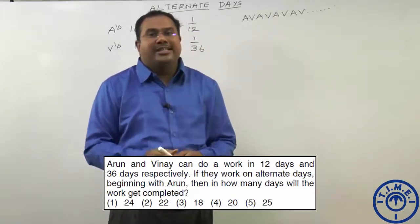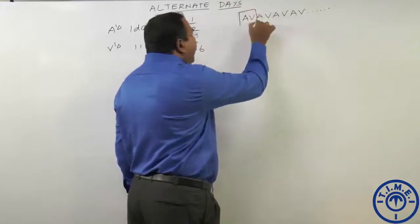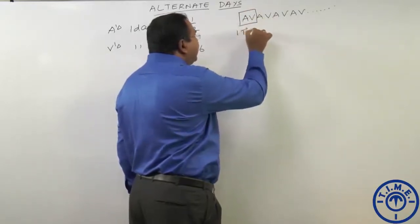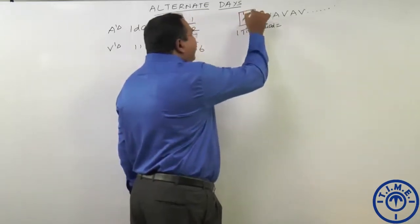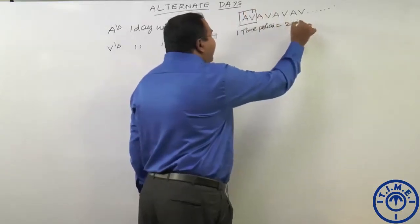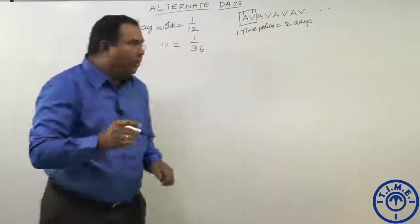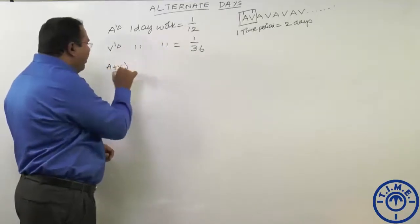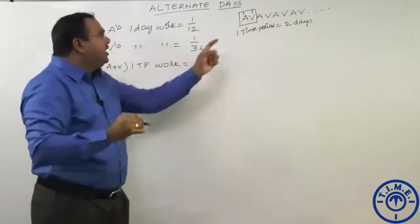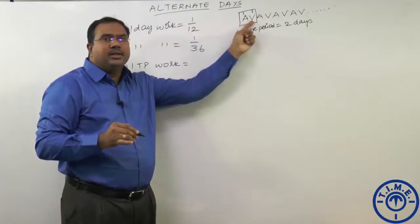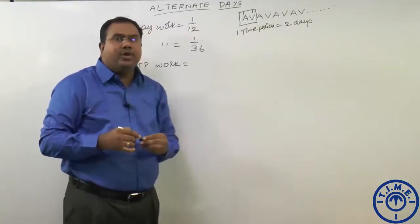Now, in how many days is the total work completed? Consider Arun and Vinay as one time period. In this one time period, Arun works for one day and Vinay works for one day. That is, one time period is equal to two days. We cannot find out their one day work because they are working on two different days, so let us consider these two different days as one time period.